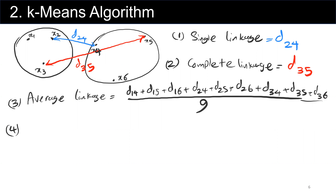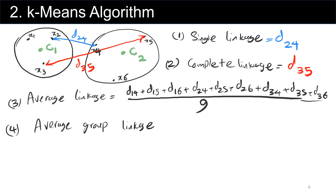Finally, another measure is to find the centroid for each cluster. We call this C sub 1 for cluster 1 and C sub 2 for cluster 2, and then call it average group linkage. Average group linkage is the distance between the two centroids, d from C sub 1 to C sub 2. These are different measures to evaluate similarity when we have two clusters.